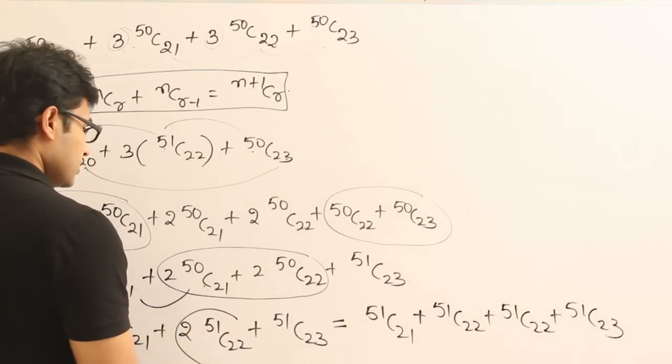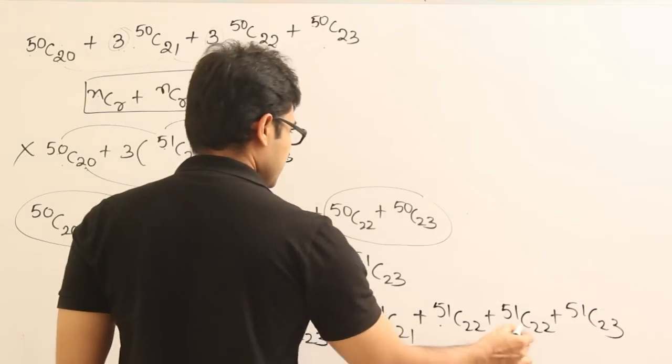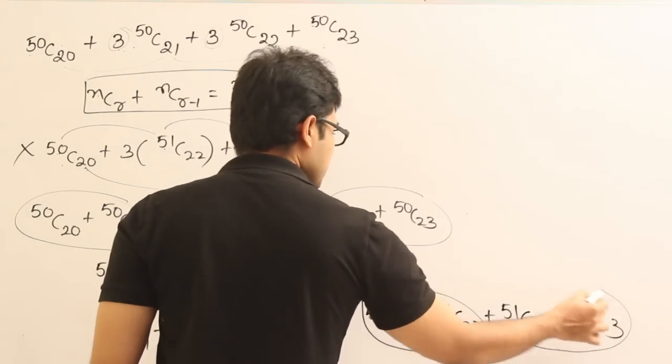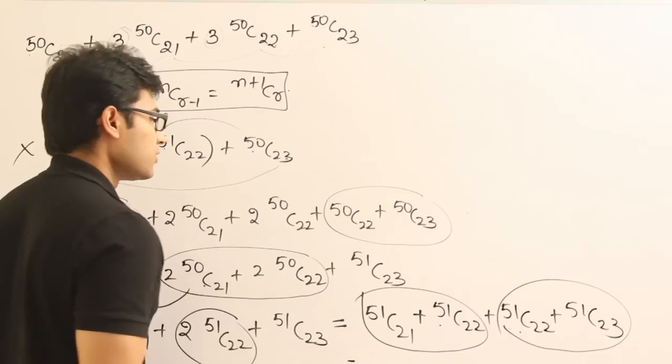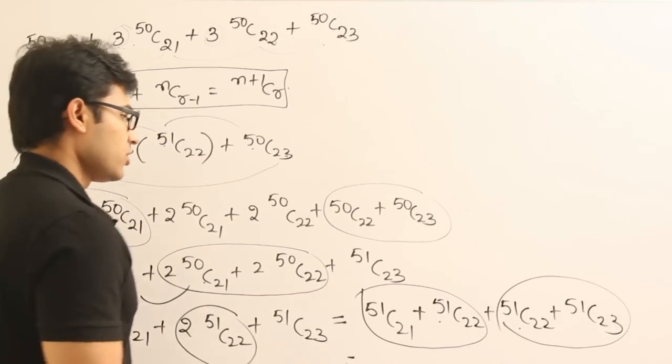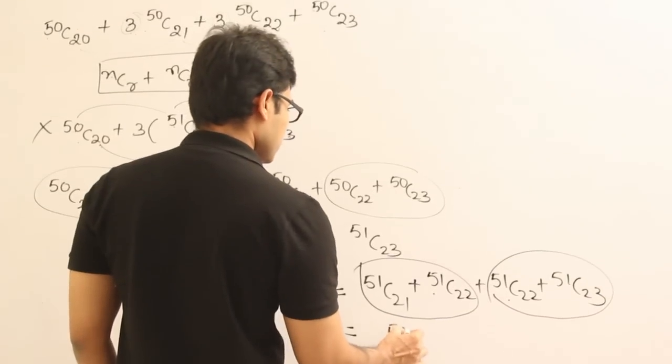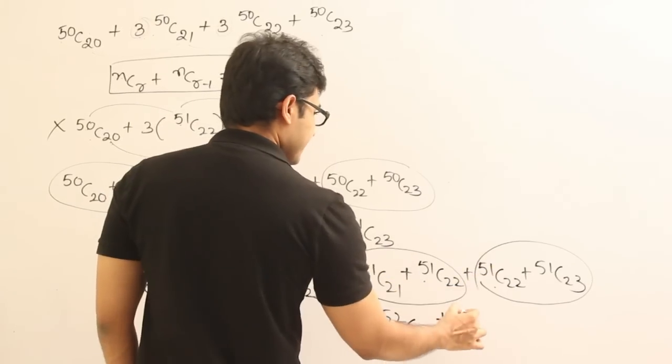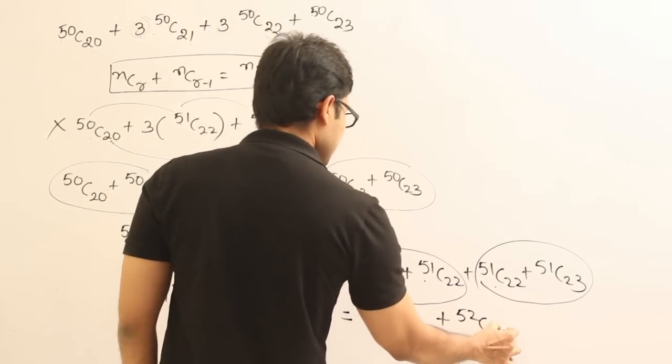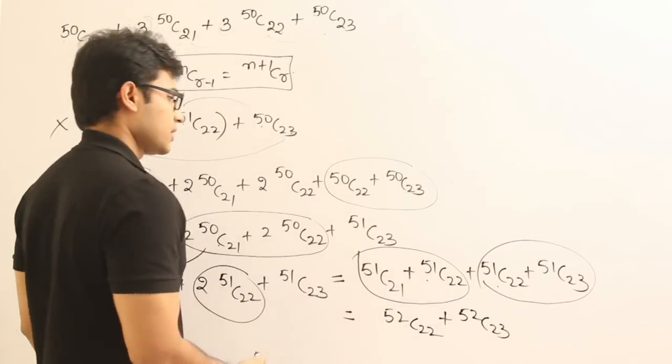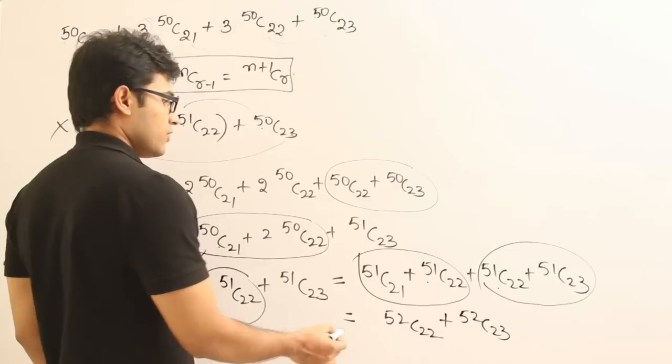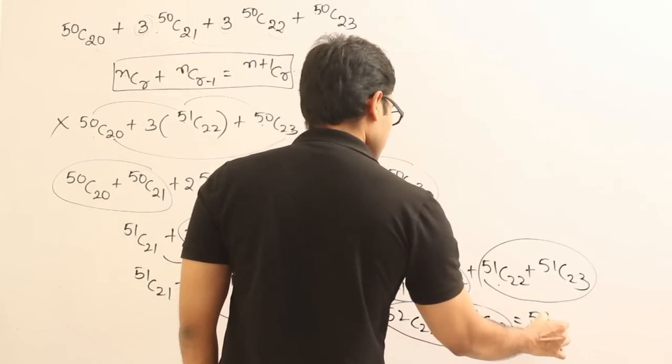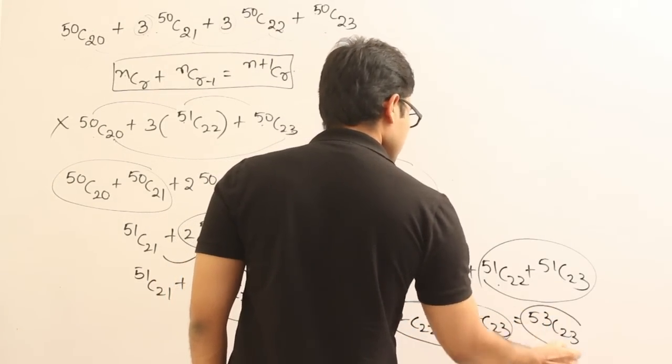Right? And now you can merge these two and merge these two using that rule, that result, earlier result. Then what do we get here? 52C22 plus 52C23. Got it? And now we can easily combine it. Then what do we get? 53C23. So this is the result.